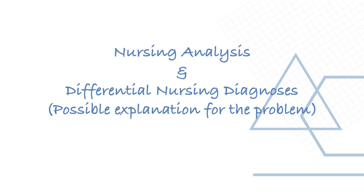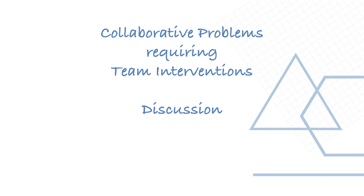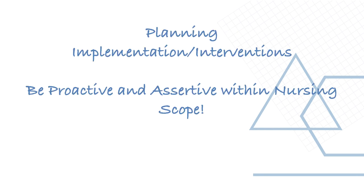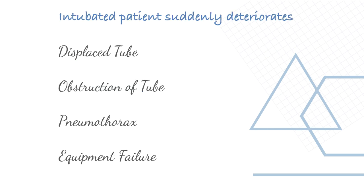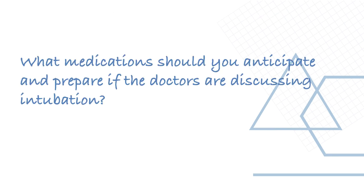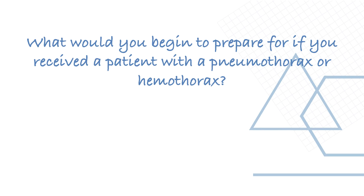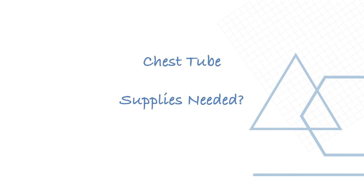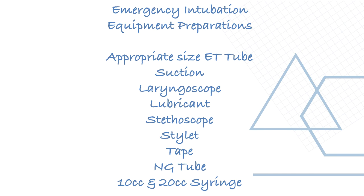Nursing analysis involves differential nursing diagnosis — a possible explanation for the problem. Collaborative problems require team intervention. In planning and implementation, be proactive and assertive within nursing scope. For intubated patients who suddenly deteriorate, look for a displaced tube, obstruction in the tube, pneumothorax, or equipment failure. Anticipate and prepare medications if the doctors are discussing intubation, and prepare for a patient with pneumothorax or hemothorax.